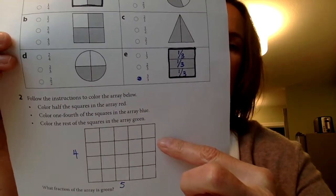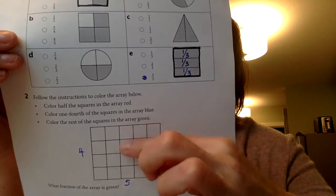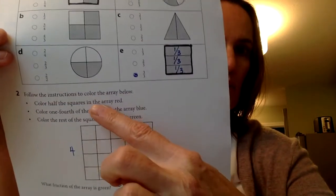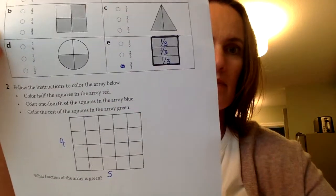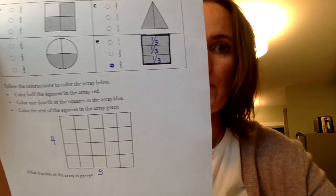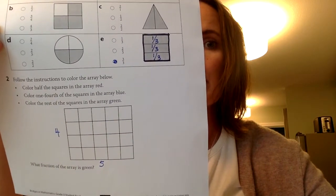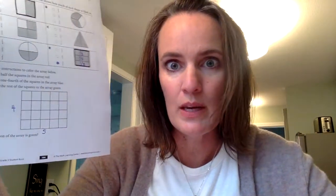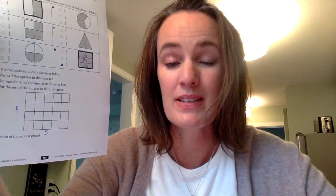So I would want to color in half, half my squares red, like it says. And then one fourth of the squares blue and the rest of the squares green. When you finish, will you take a picture and send it to your teacher so we can see your awesome work? All right. See you next time.